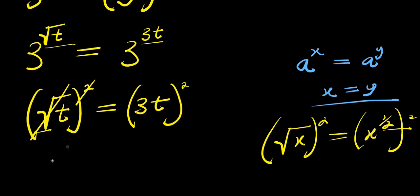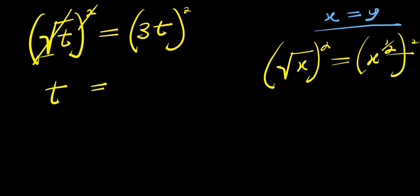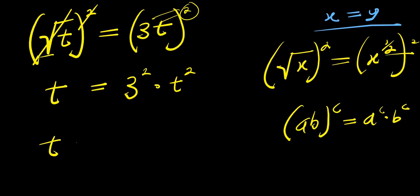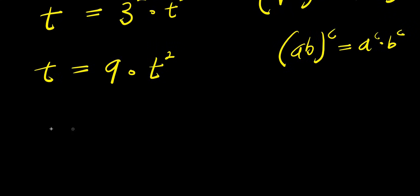So the square root cancels out and we have t equals — for this we need to distribute the power to each of the terms here. Remember, if you have (a times b) raised to the power of c, this equals a to the power c times b to the power c. So we have 3 squared times t squared, giving us t equals 9t squared.